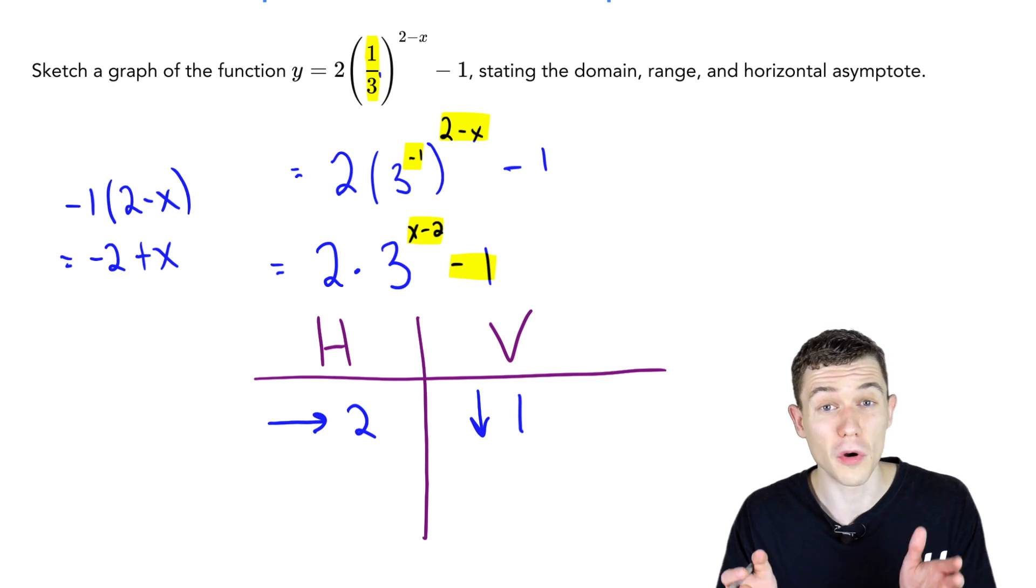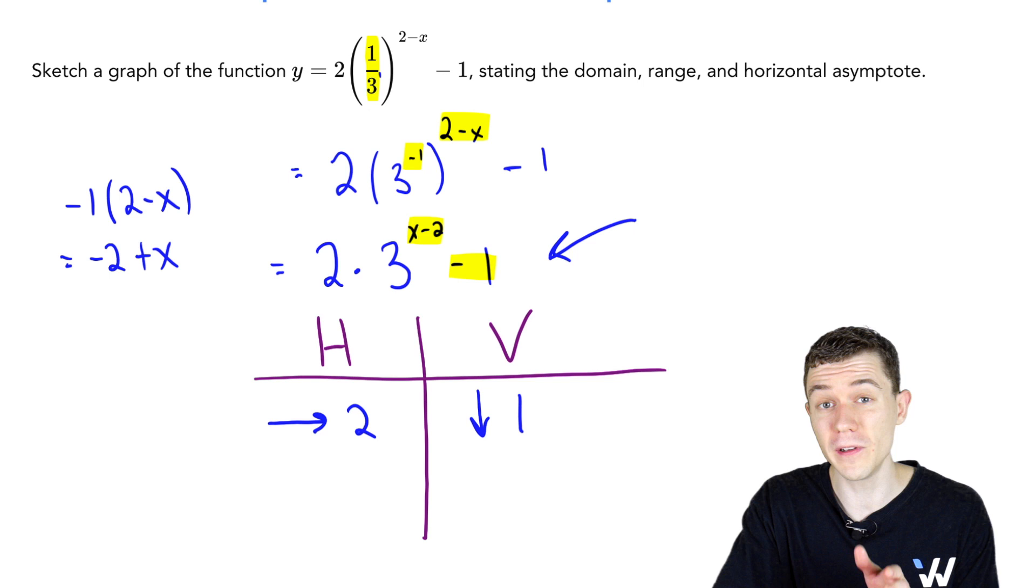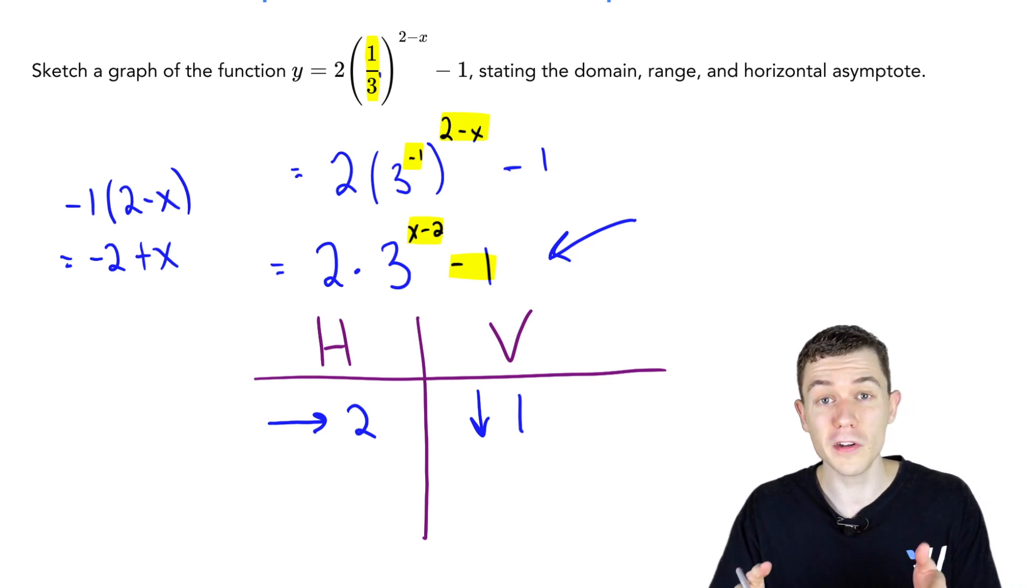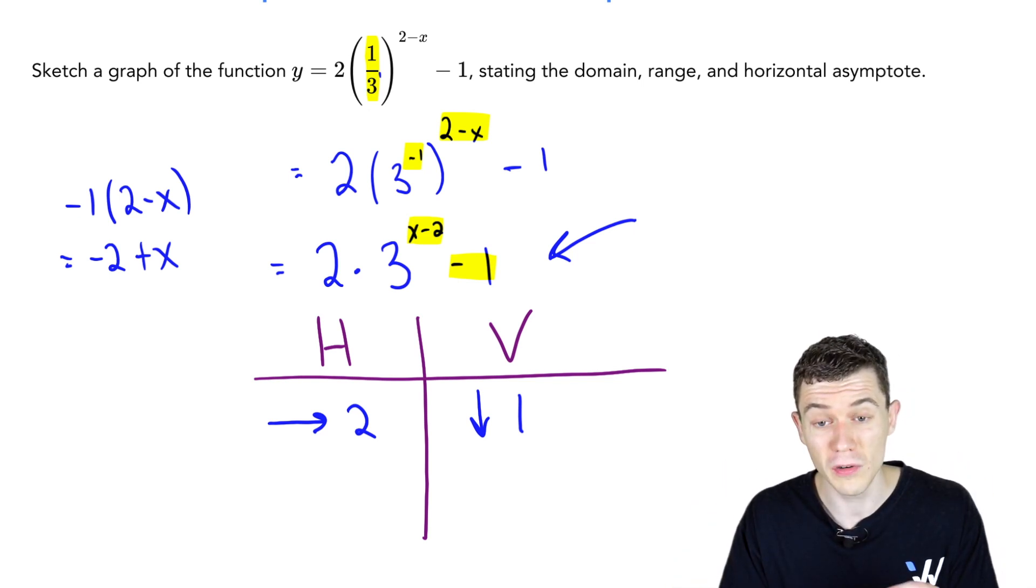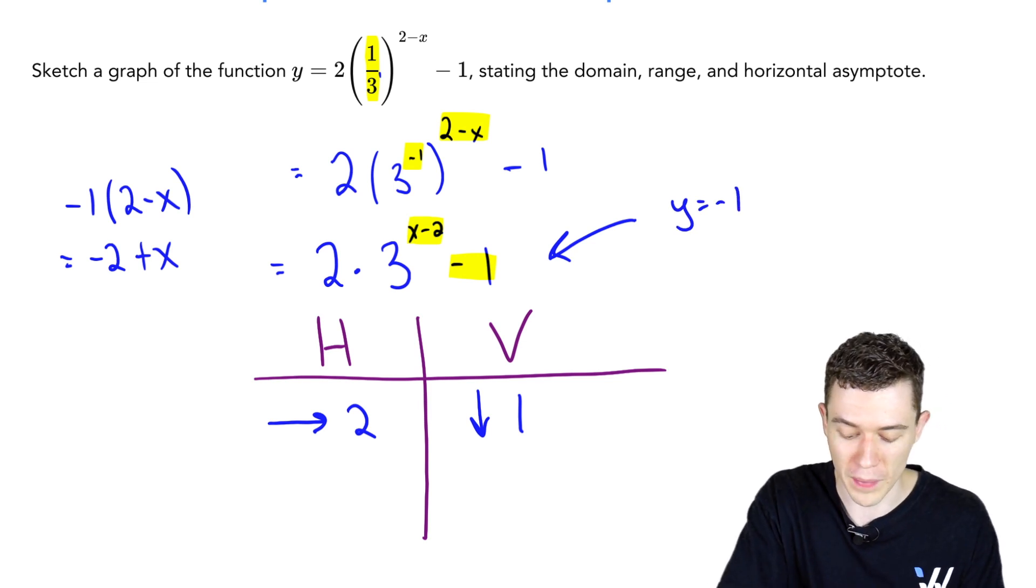Our horizontal asymptote is typically at y equals zero, but the vertical shift shifts us down one unit down to y equals negative one. This number out back is always our horizontal asymptote.